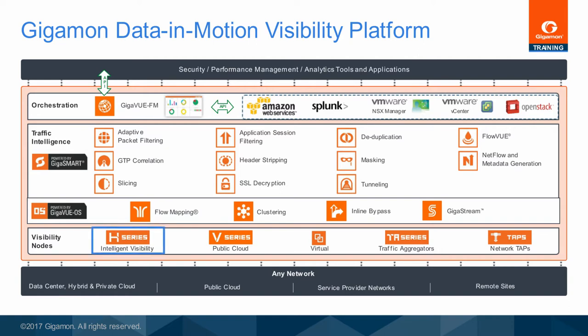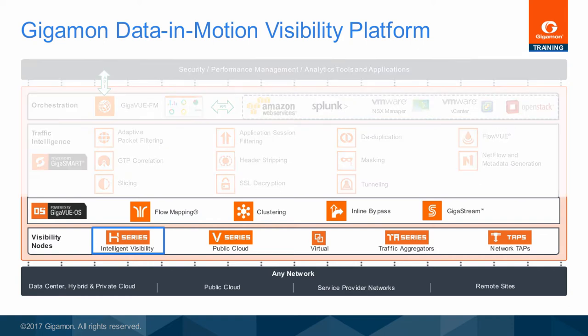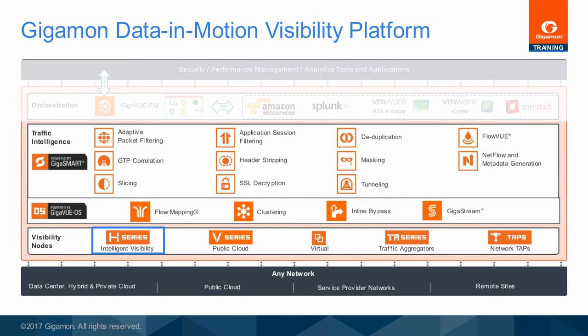The Gigaview HB1 is a member of the Gigaview H series of Gigaview Visibility Platform nodes, providing the power of the Gigamon Visibility Platform and the flexibility of GigaSmart packet processing in a low-cost 1RU form factor. The Gigaview OS drives fundamental fabric services, such as flow mapping, clustering, inline bypass, and GigaStream. Traffic intelligence is powered by GigaSmart technology, which provides stateful and packet-level optimization and normalization functions.